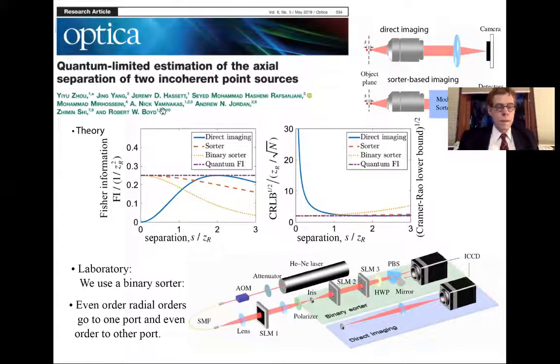And this paper got published in Optica about a year ago. What can I say? First of all, here's just a conceptual picture for direct imaging. Here you have the object that you want to measure. You collect the light and you focus it down on a camera. What we did instead was use a sorter-based imaging. You collect the light and then you send it to a mode sorter. And each of the modes leaving this object is sent to a different detector.